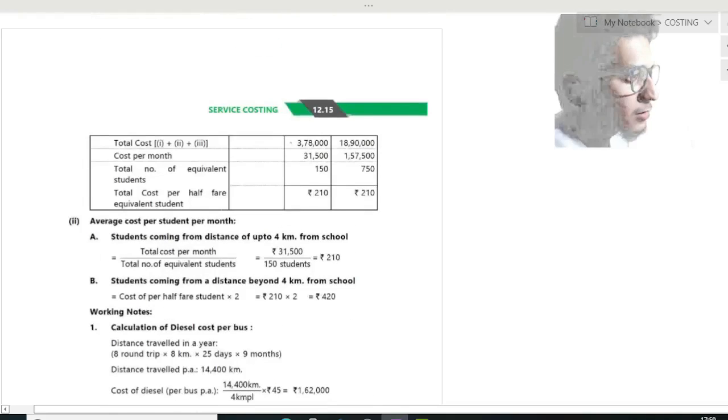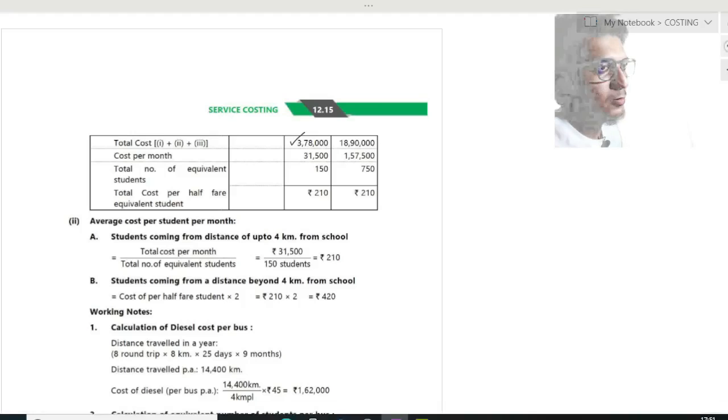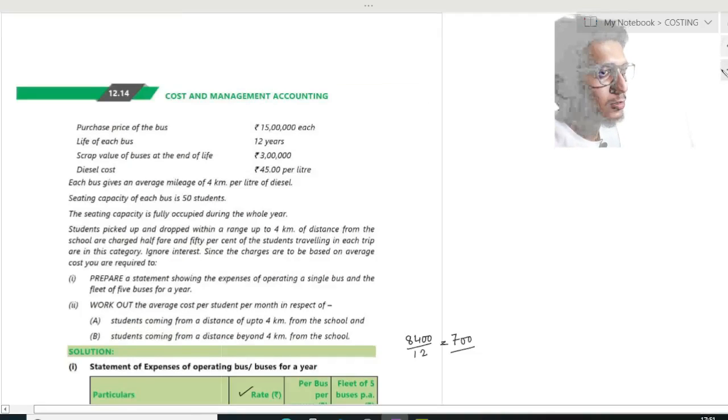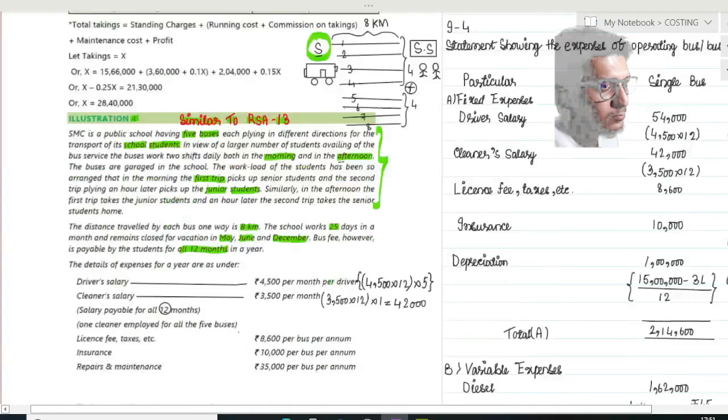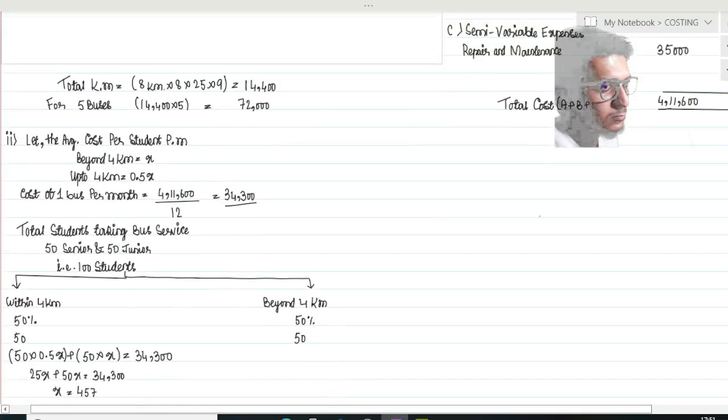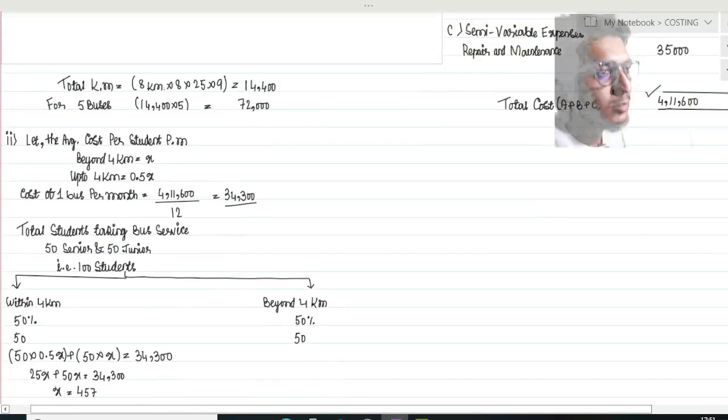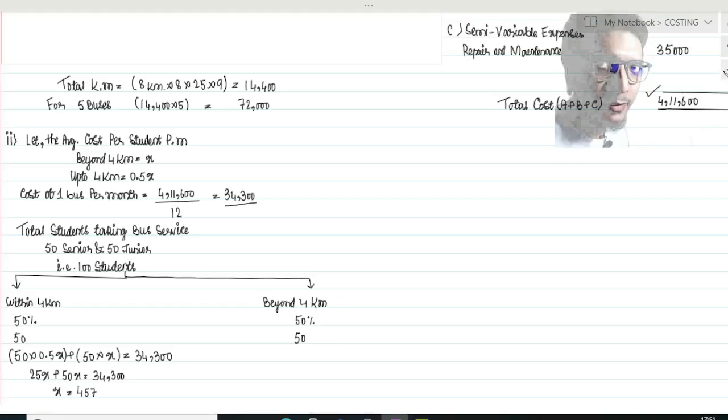Because of this error, the answer of the question won't tally. For the fleet of five buses the answer is correct, but for a single bus the answer won't tally. Their answer is ₹3,78,000 total cost, but according to the correct solution the answer will be ₹4,11,600. So the first part won't match, and the second part will also not match.